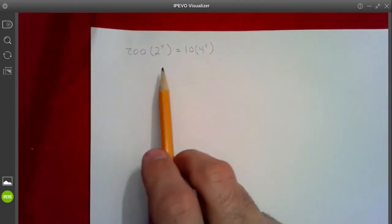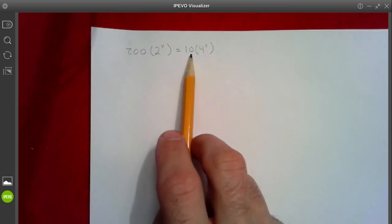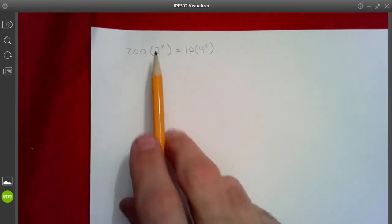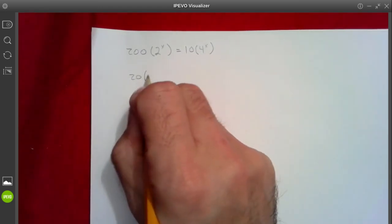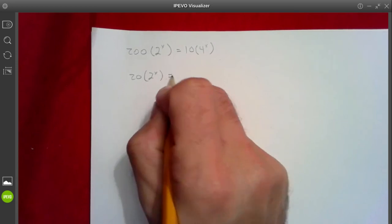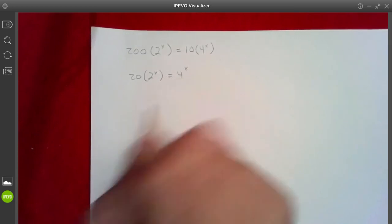Okay, so for this problem, I'm going to start by making it a little bit simpler. I'm going to divide by 10, because 10 goes into 200 evenly. So this is going to leave me with 20, 2 to the x is equal to 4 to the x.